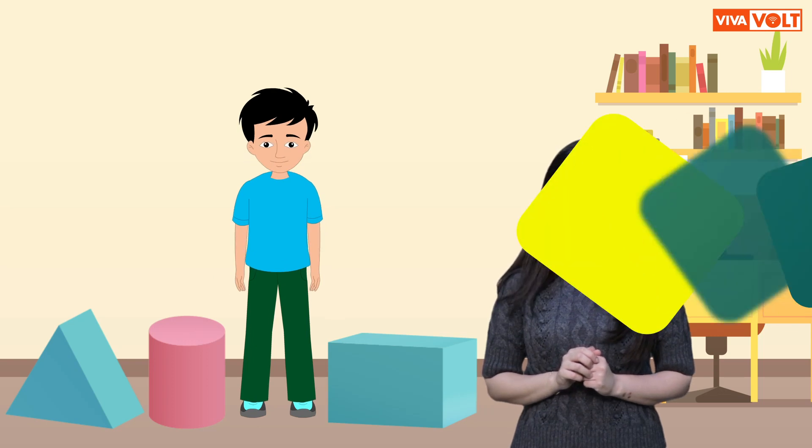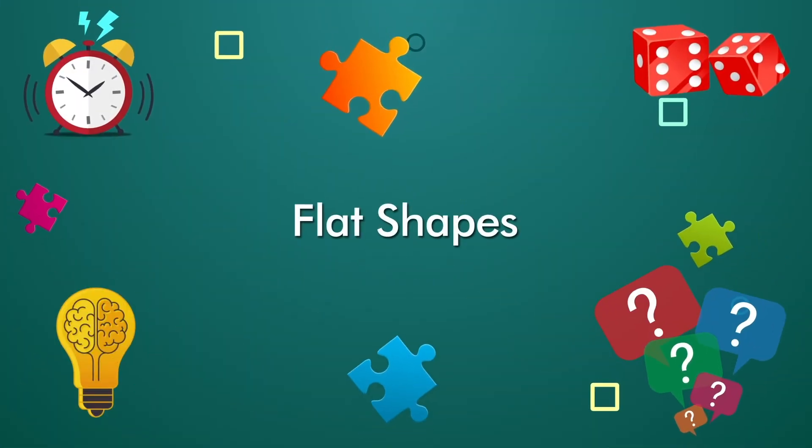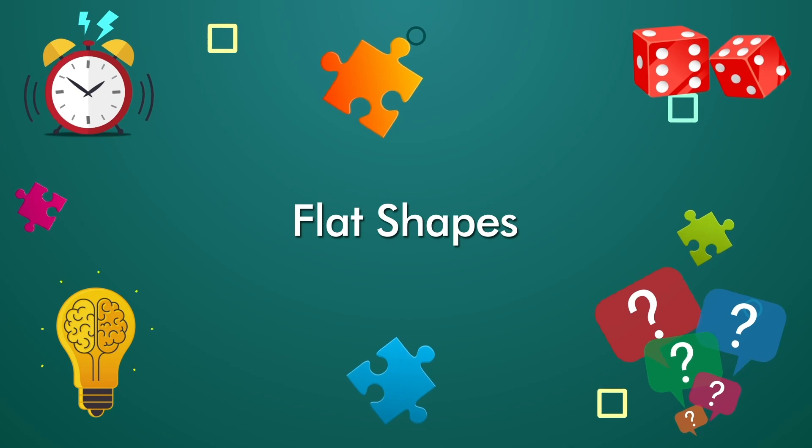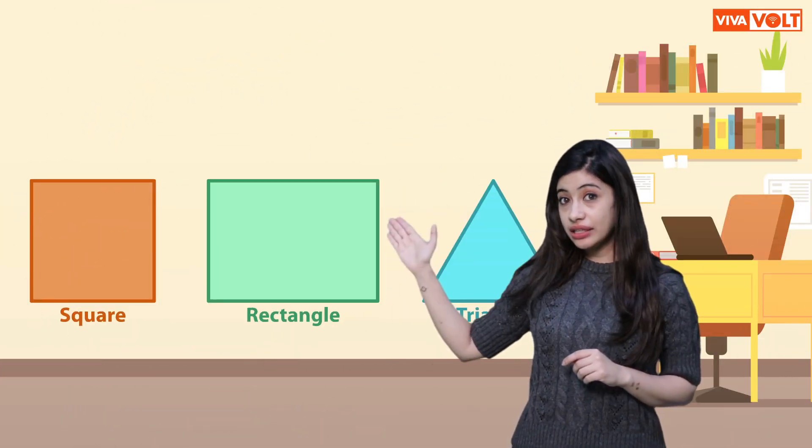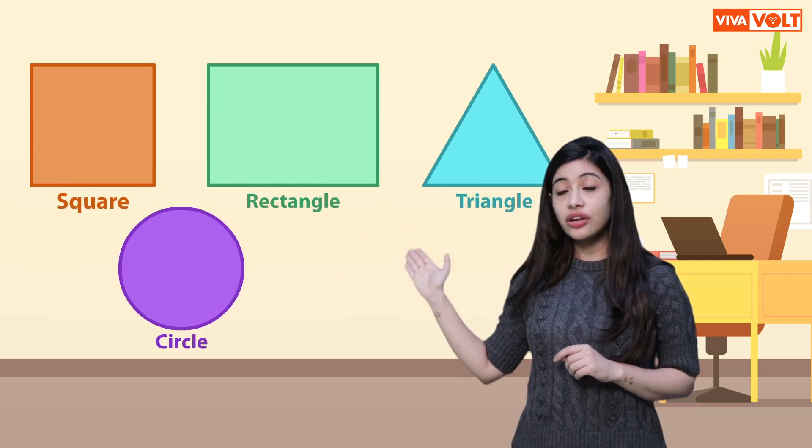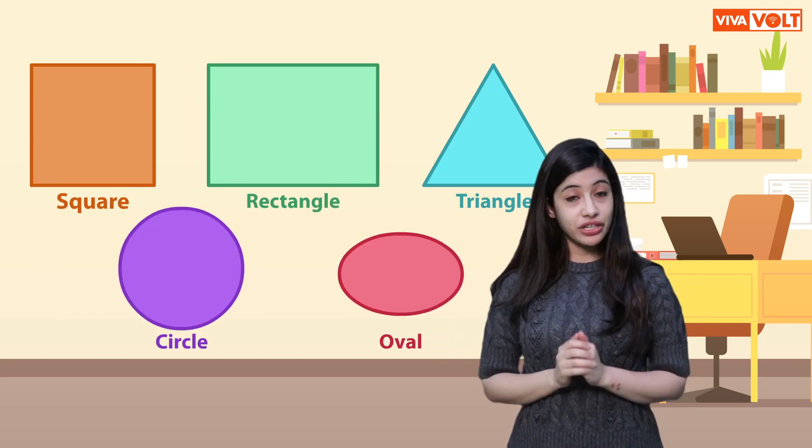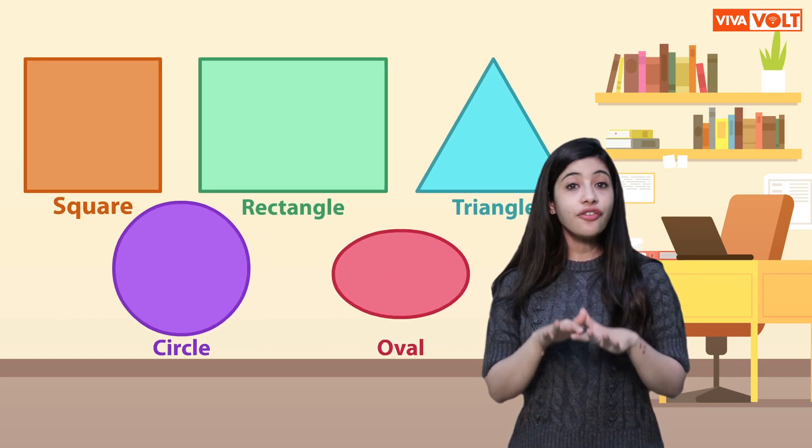Let's start with flat shapes. Square, rectangle, triangle, circle and oval are basic geometrical shapes. These are flat shapes.